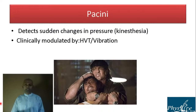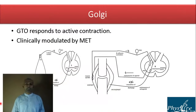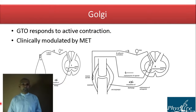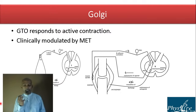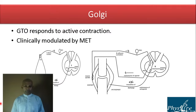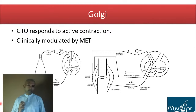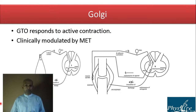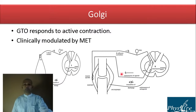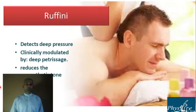The Golgi tendon organ (GTO) is an inhibitory receptor and can be modulated effectively with active contraction. It cannot be significantly regulated by passive compression of the tendon — it is most significantly activated via active contraction. That is why we use post-isometric relaxation or reciprocal inhibition — in other terms, muscle energy technique or PNF.